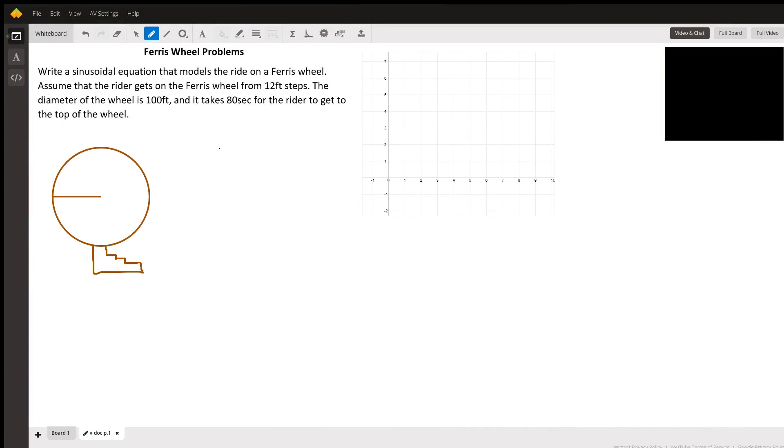This is a typical ferris wheel problem where we need to write a sinusoidal equation and plot it on the graph to model the ride on a ferris wheel. So we have a ferris wheel with 12 feet stairs, 50 feet radius.